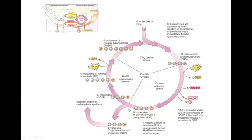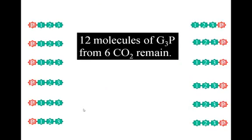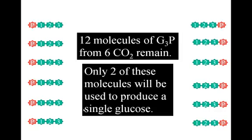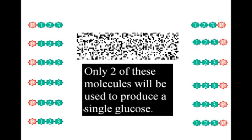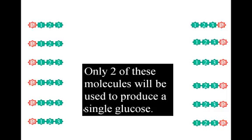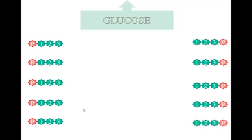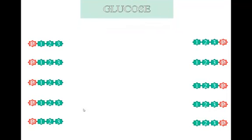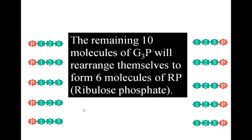So we are at this juncture right here. Two of these molecules of glyceraldehyde 3-phosphate are going to end up being used to produce a sugar. The remaining ten molecules will then rearrange themselves into six molecules of ribulose phosphate.